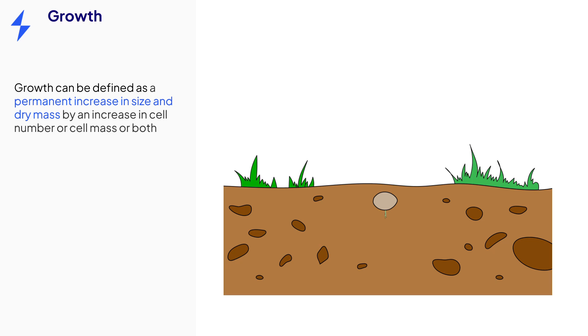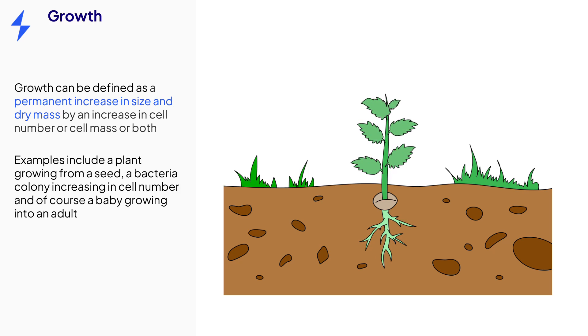Growth is a permanent increase in an organism's size and dry mass. This occurs because of an increase in the number of cells or the cell mass, or sometimes both. All organisms grow. Even the largest of trees started life as a small seed, and you started life as just one cell.